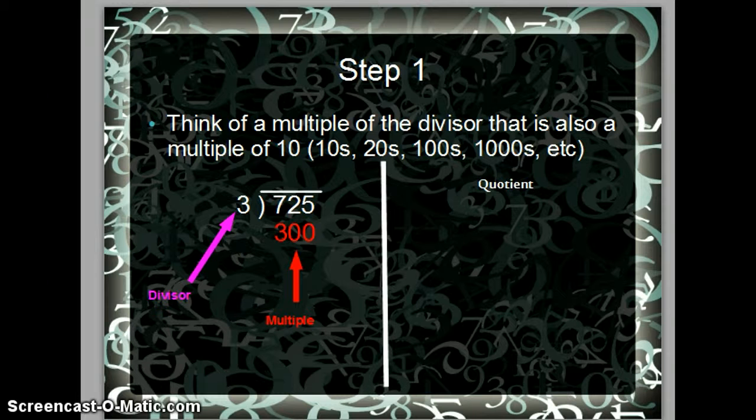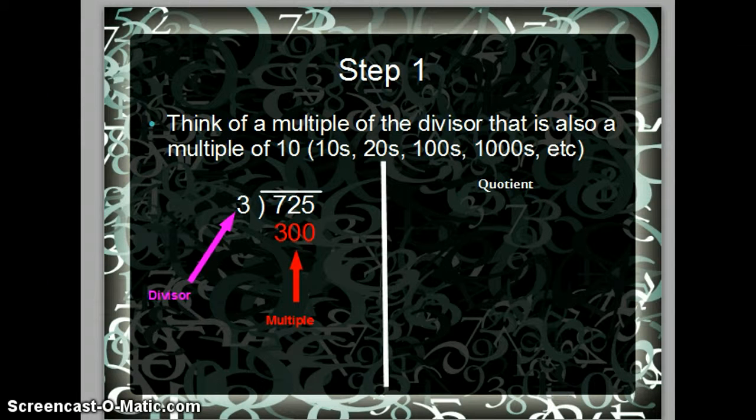Here are the steps to using the partial quotient algorithm. Step 1, think of a multiple of the divisor that is also a multiple of 10. This number usually ends in a zero and is in the tens place, hundreds place, or thousands place.